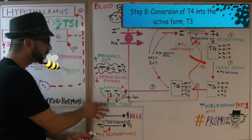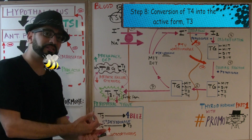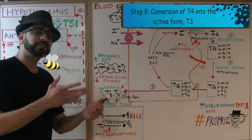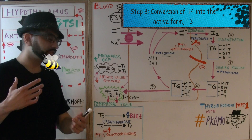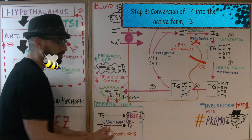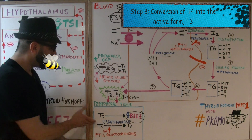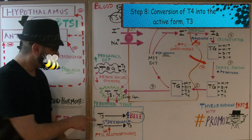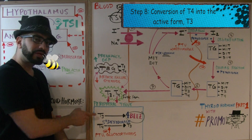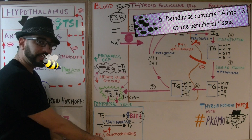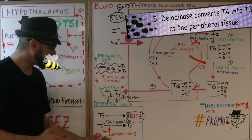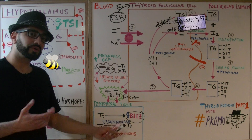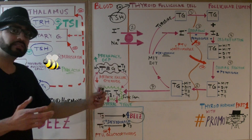T3 and T4 circulate and act on specific target tissues. T3 directly causes effects we'll discuss shortly. For T4, we use the four B's mnemonic. T4 is not in a biologically active form — it needs to convert into T3 by the enzyme 5'-deiodinase. PTU and glucocorticoids will inhibit this conversion step.